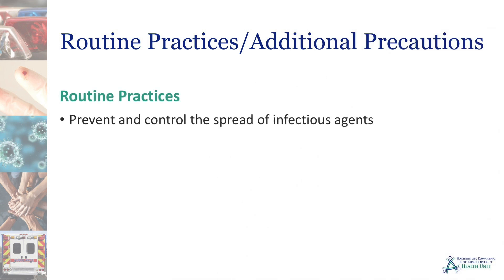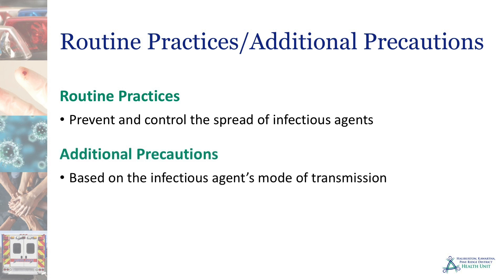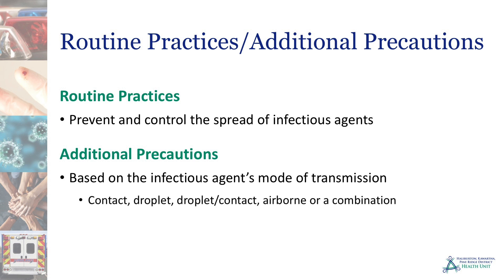Routine practices prevent and control the spread of infectious agents. Additional precautions are based on the infectious agent's mode of transmission, and that can include contact, droplet, droplet contact, and airborne, or a combination. Always follow your agency's specific guidelines, protocols, policies and procedures for implementing routine and additional precautions.